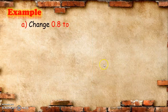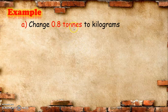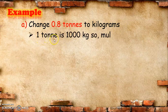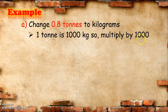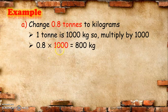First given: change 0.8 tons to kilograms. We all know that 1 ton is equal to 1,000 kilograms, so we multiply 0.8 times 1,000. It is equal to 800 kilograms. In other words, 0.8 tons is equal to 800 kilograms.